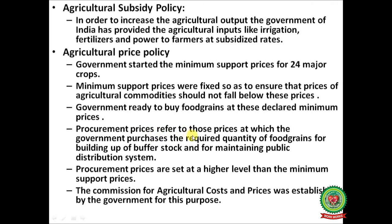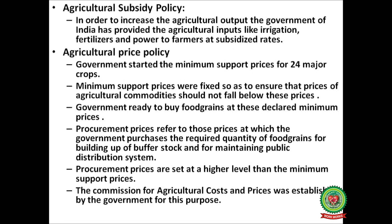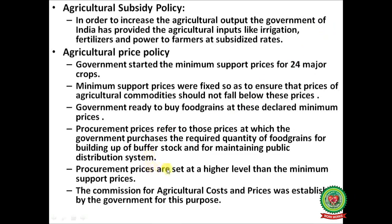Procurement prices refer to those prices at which the government purchases the required quantity of food grains for building up buffer stock and for maintaining the Public Distribution System. Buffer stock is the stock left with shopkeepers that is purchased by the government for use in emergencies. Procurement prices are set at a higher level than minimum support prices. The Commission for Agricultural Costs and Prices was established by the government for this purpose.